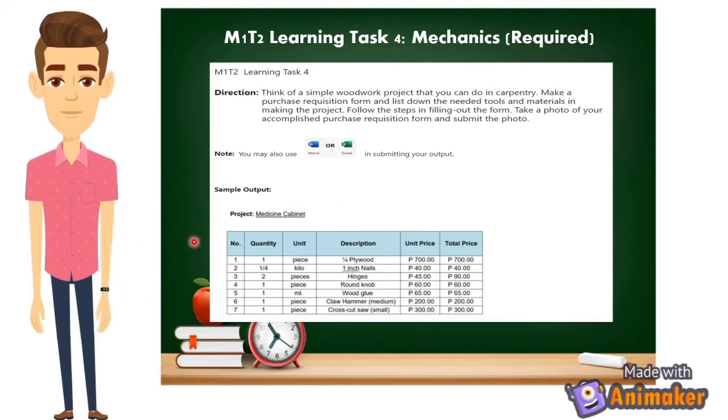For the sample output, the project is a medicine cabinet. These are the materials needed in making the hanging cabinet or the medicine cabinet. That's what you'll do and submit using file, word or Excel, depending on your preference.